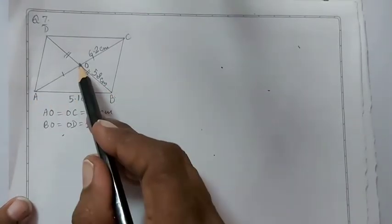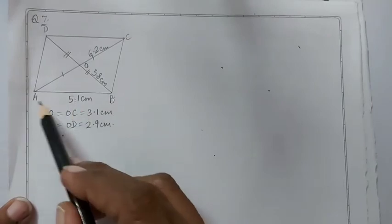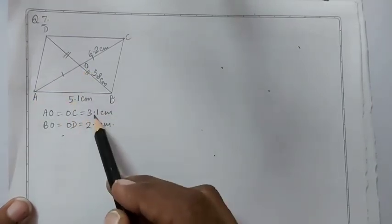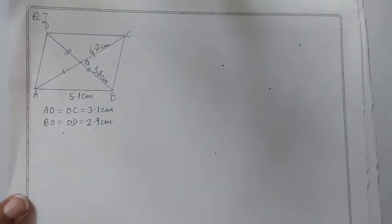First of all we will draw triangle AB. So AB equal to 5.1, AO equal to 3.1 and OB 2.9 cm.